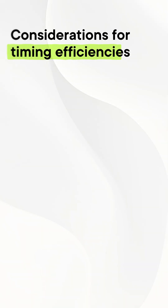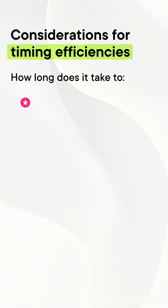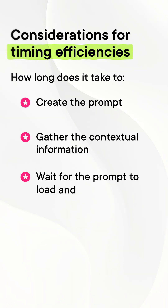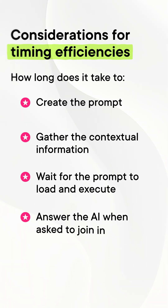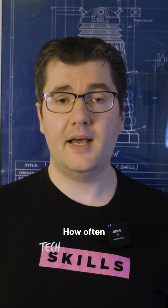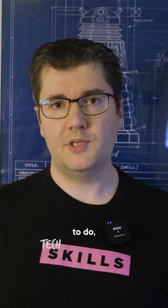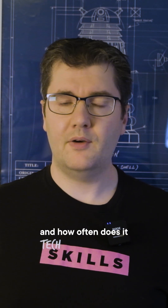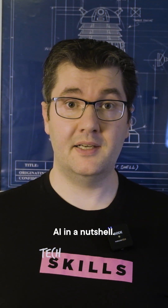Make sure you're properly timing your actual efficiencies when using an agentic solution. How long does it take you to create the prompt, gather the contextual information, wait for the prompt to load and execute, and then answer the AI's prompts when it asks you to jump in? Also keep track of the task error rates — how often does it actually do what you want it to do, and how often does it fail? And that's agentic AI in a nutshell. Now you know what's behind the buzzword.